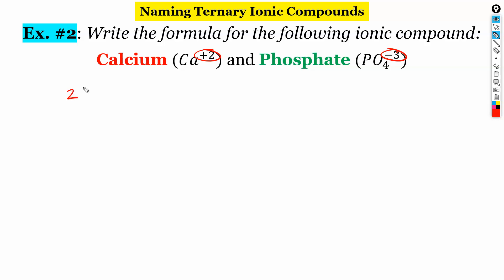So if we were to write these out, we've got two times one is two. Two times two is four. Two times three is six. And then if I did the same thing with three, three times one is three. Three times two is six. Three times three is nine. So our least common multiple that both of these numbers have is six. So we go to write our formula. We want to make sure that we're multiplying appropriately to get to six. So calcium has a charge of plus two. Two times three gets a six.